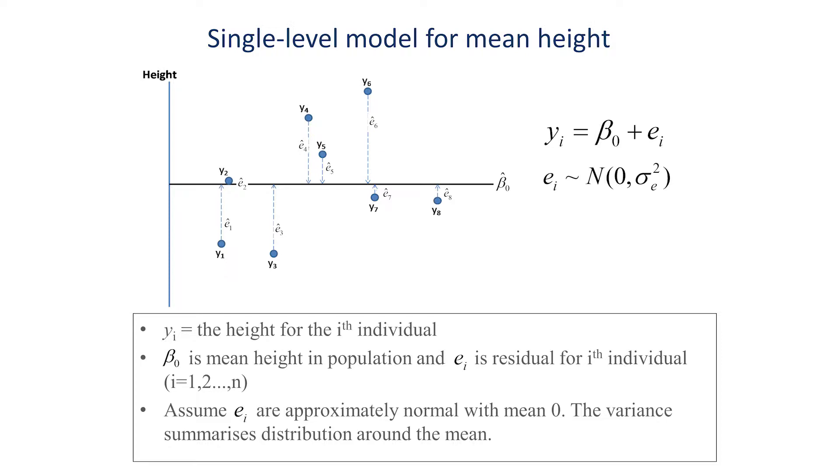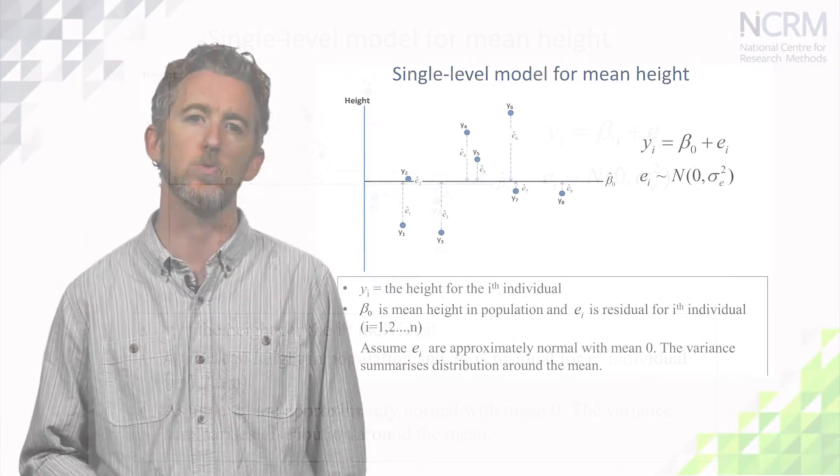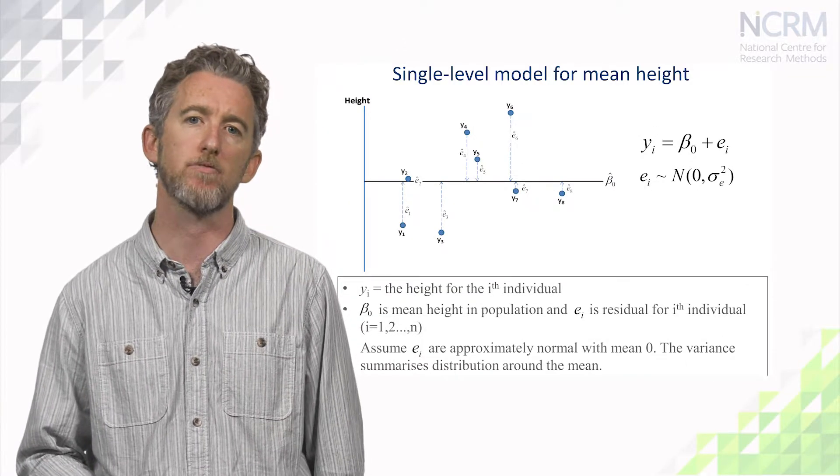We can also think of this as a basic regression model with no explanatory variables. Here, the height for any individual, y_i, is equal to the mean height across the population, β₀, and the individual's residual difference from this mean.